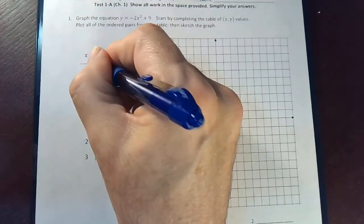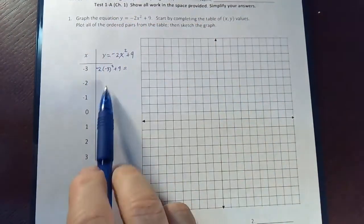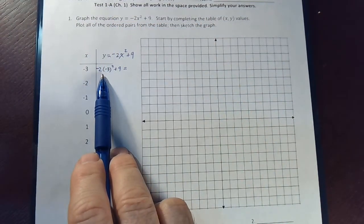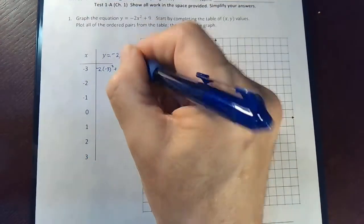Left off the negative 2 there. So it's actually negative 18 plus 9, which is negative 9.